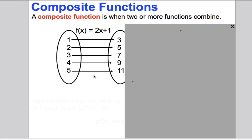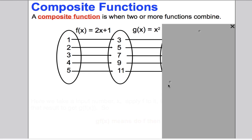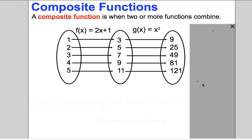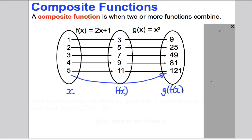Now imagine we take the output numbers — the range of F — and apply another function G to them. In this case our function G is to square the numbers. So the range of F becomes the domain of G, and we square those numbers to get 9, 25, 49, 81 and 121. You could think of this as one function: take an x, apply F to get F(x), then apply G to get G(F(x)). So that one combined function is G of F of x.